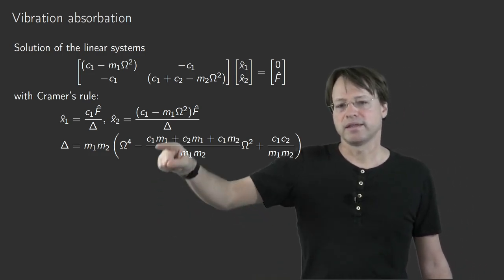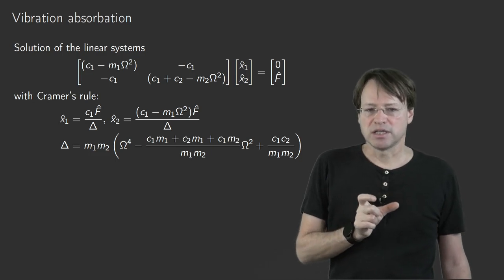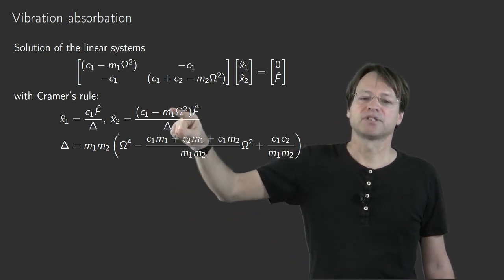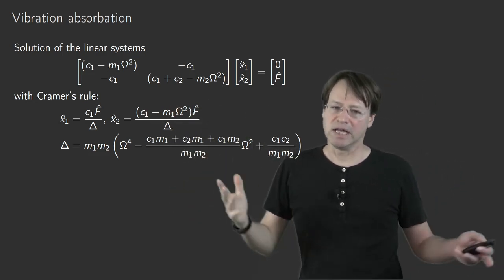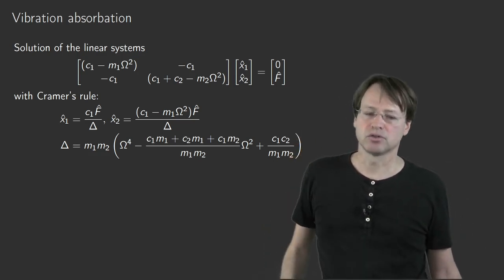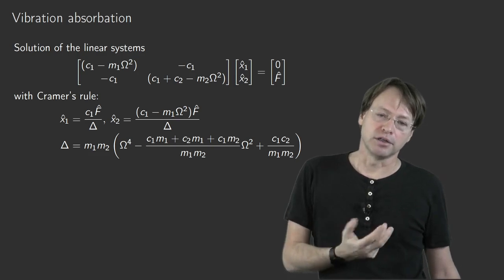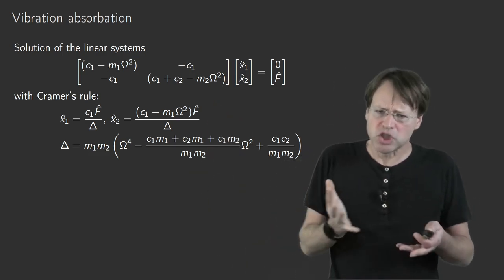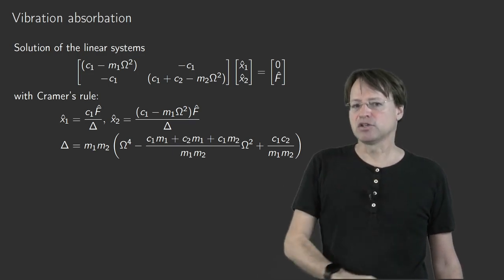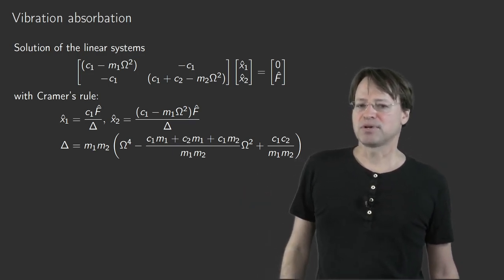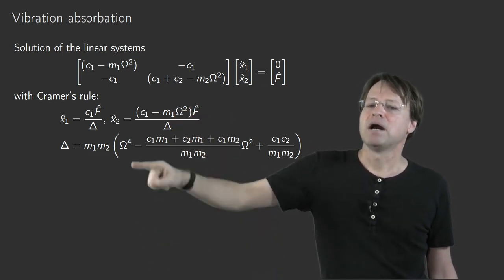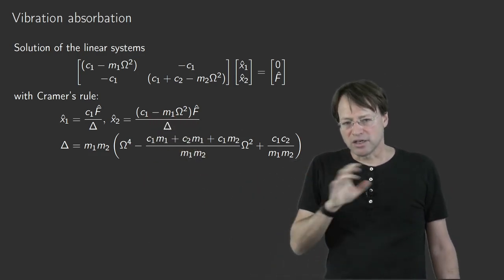If you do not know Ω beforehand — for example in an earthquake — you need an adaptive system that adjusts stiffness C1 or mass m1. In civil engineering, the mass m1 can be adapted by pumping water in or out of a tank, or the stiffness can be adapted. This is the principle of a tuned mass damper. One can show that the absorption frequency Ω² = C1/m1 is always different from the two resonance frequencies where Δ = 0.